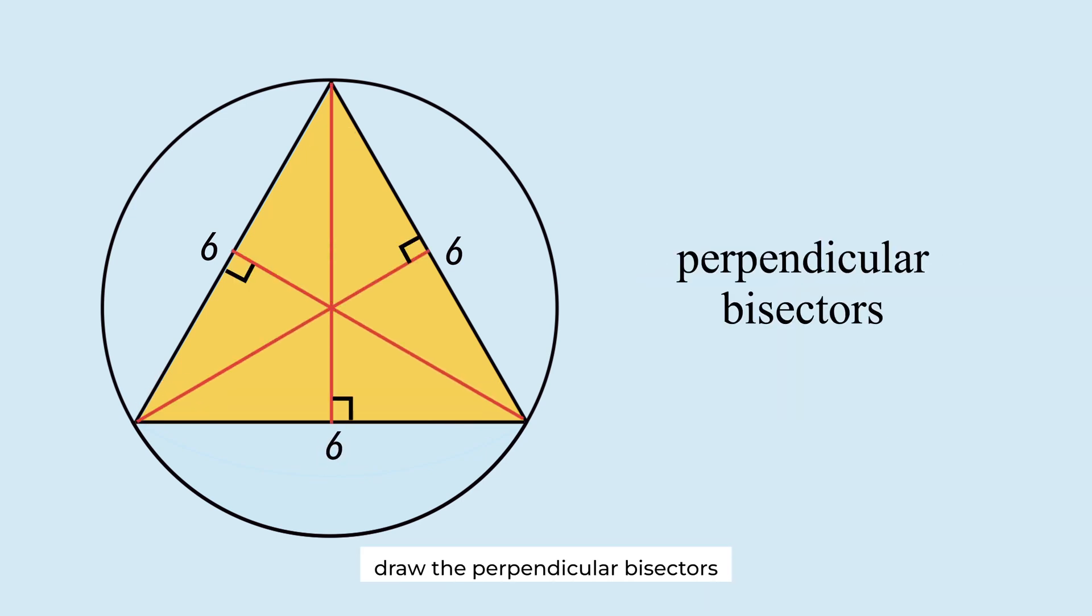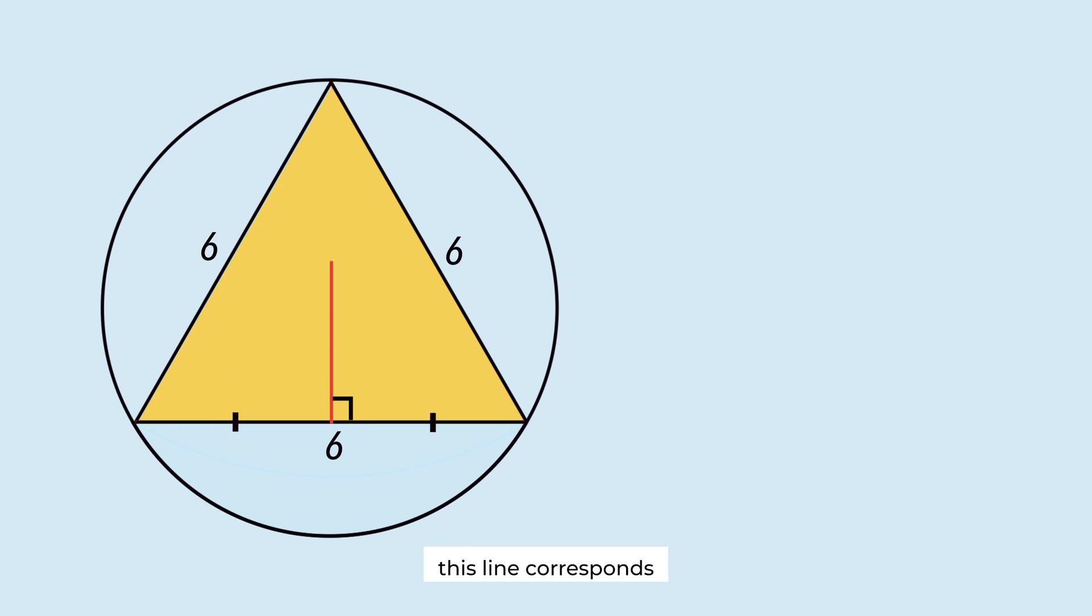Draw the perpendicular bisectors of each side. This line corresponds to the height of the triangle. Apply the Pythagorean theorem. The height is this. Therefore, the area of the triangle is this.